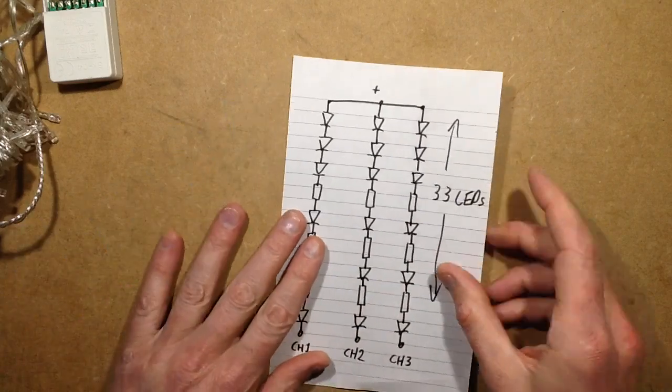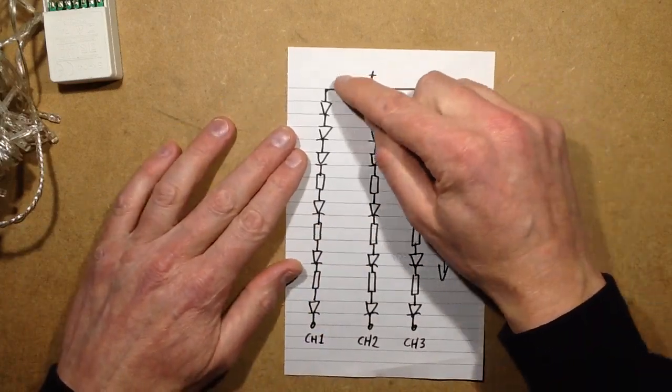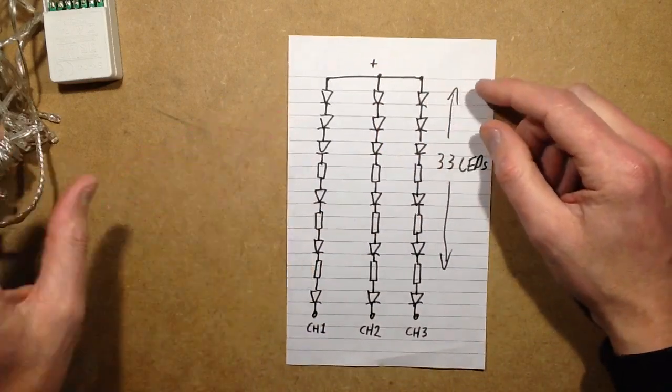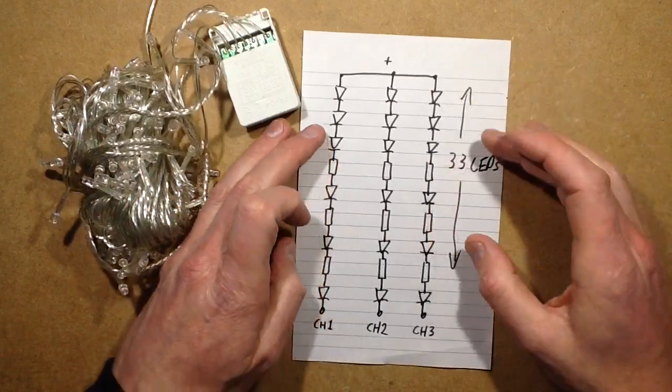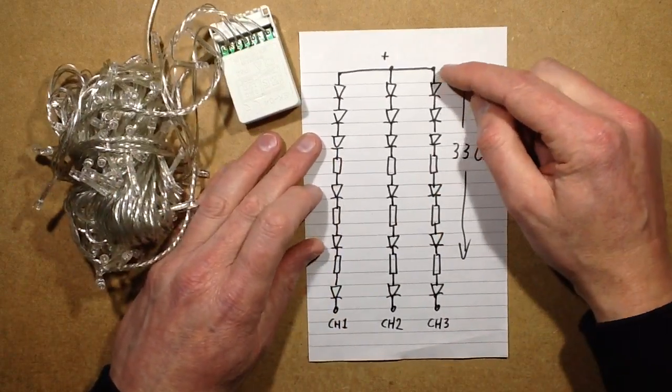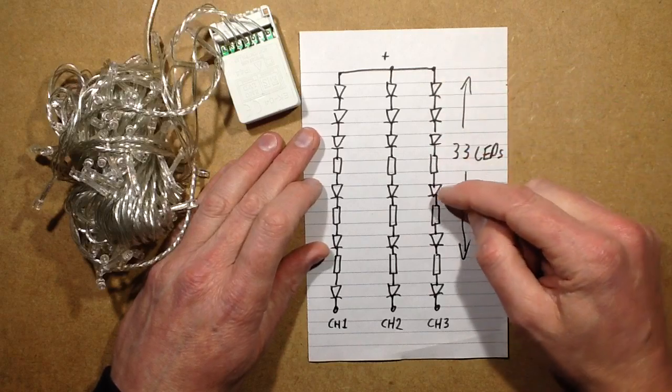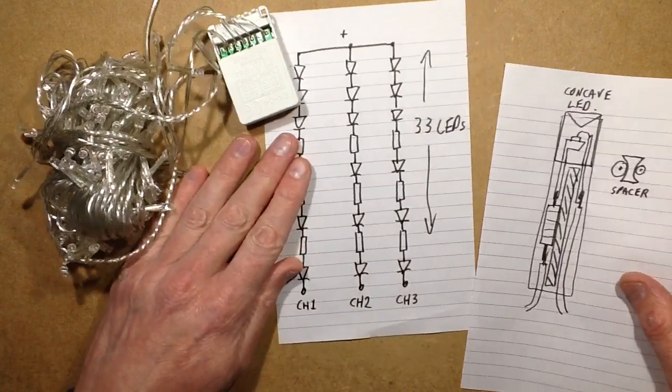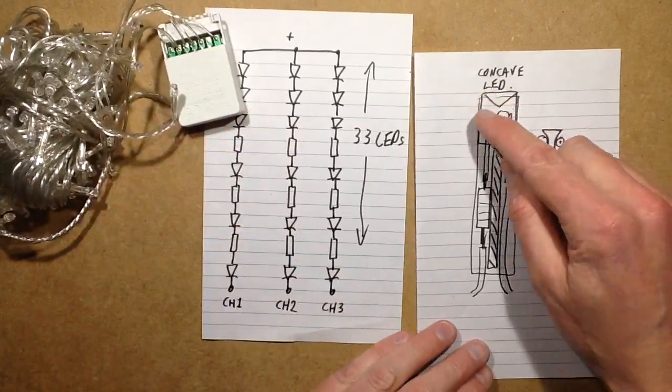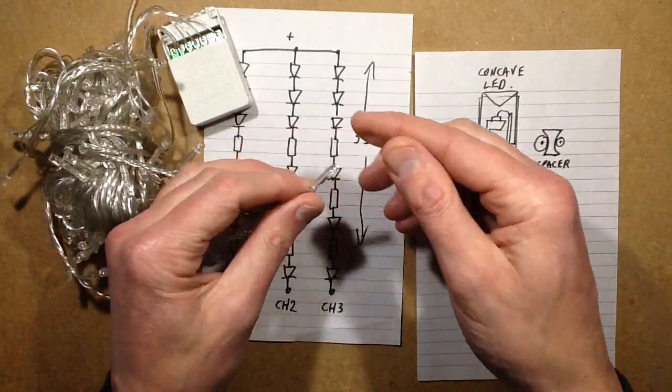The string is actually wired with a common positive, and in the case of these 100 LED sets, it's 33 LEDs except for the one that will be 34 just to make it up to 100. It's basically a string of LEDs, and right at the very end they add resistors in - a multiple of resistors inside the little heat shrink sleeves.